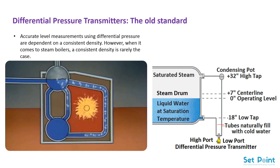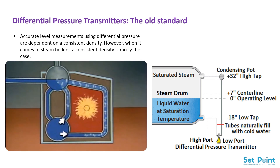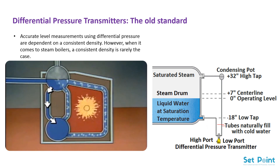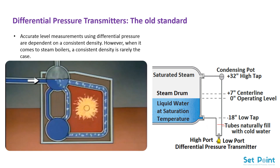Differential pressure sensors have been around a long time, and the measurement is a versatile, widely used technology for all types of applications, including many steam boiler applications around the world. However, many operations only run their steam boiler at a fraction of their full capacity because of the potential inaccuracies associated with the level measurement. With a different technology providing a better level measurement, steam boilers can operate more efficiently and more safely.